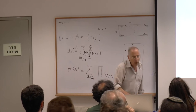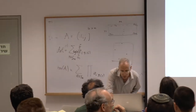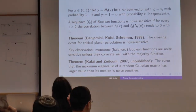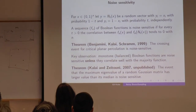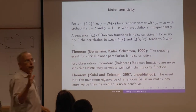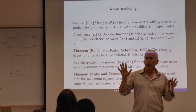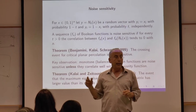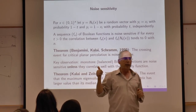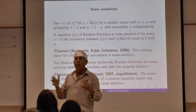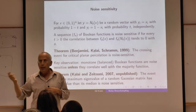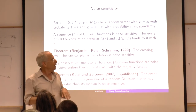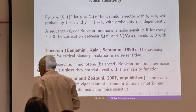Now I come to the second part: noise. I want to tell you about noise sensitivity and noise stability. We are here living in the world of Gaussian variables, and I will move to describe things in the world of Boolean variables. They are very similar — the Gaussian are simpler in various respects, but for combinatorialists the Boolean are somewhat simpler, and this is also how this series started.